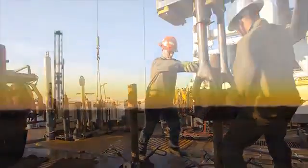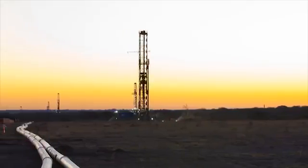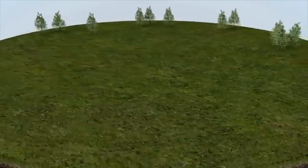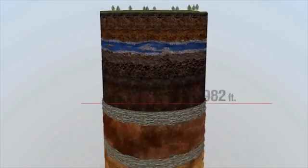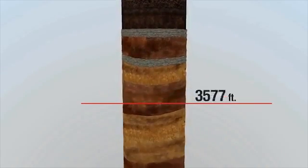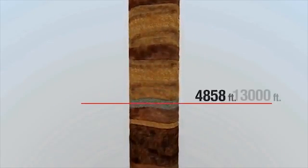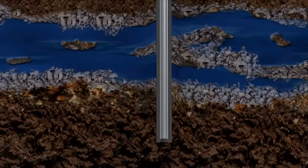Let's look at the drilling and completion process of a typical oil and natural gas well. Shale reservoirs are usually one mile or more below the surface, well below any underground source of drinking water, which is typically no more than 300 to 1,000 feet below the surface. Additionally, steel pipes called casing, cemented in place, provide a multi-layered barrier to protect freshwater aquifers.